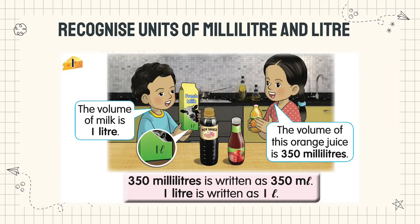Example number one. The boy says the volume of milk is one liter. The girl says the volume of this orange juice is 350 milliliters. Isi padu susu ialah satu liter. Isi padu jus orange ialah 350 milliliter.